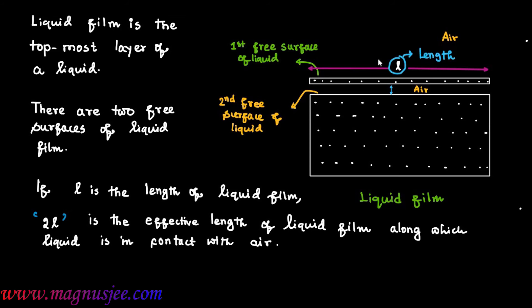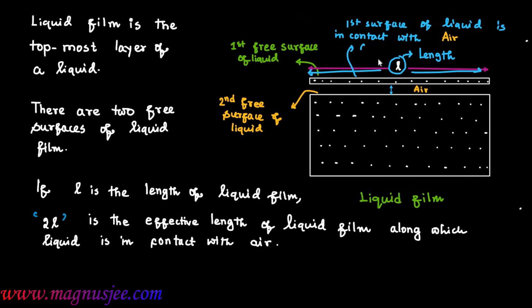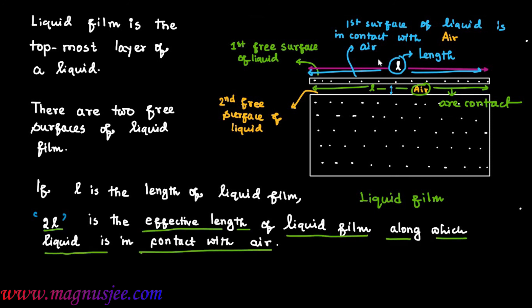In the diagram, L is the length of the liquid film. The first free surface is in contact with air along length L, and the second free surface is also in contact with air along length L. Hence, 2L is the effective length of the liquid film along which the liquid is in contact with air, while L is simply the length of the liquid film.